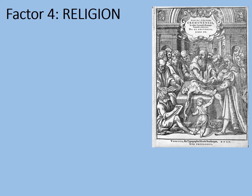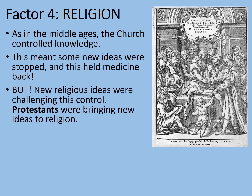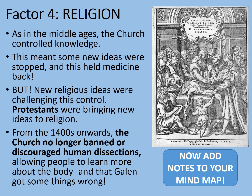Our last section: religion. As in the Middle Ages, the church controlled knowledge, meaning some new ideas were stopped and this held medicine back. But new religious ideas were challenging this control. Protestants, led by Martin Luther in Germany, were bringing new ideas to religion, and these spread around Europe. From the 1400s onwards, the church no longer banned or discouraged human dissections, allowing people to learn more about the body and that Galen got some things wrong. Remember that Roman religion also forbade human dissections — Galen had to use animals and made assumptions about animal bodies that he applied to human beings, even if they were not true. It was not possible to challenge these ideas before the Renaissance, when human dissection became more common. The engraving shown here is a printed image showing just such a Renaissance dissection, with many people studying it and learning from it. Pause the video and add notes to your final mind map section.